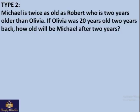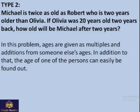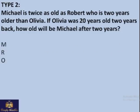Now we move on to the next type of age problem. Michael is twice as old as Robert, who is 2 years older than Olivia. If Olivia was 20 years old 2 years back, how old will Michael be after 2 years? Notice that Michael is twice as old — this involves multiplication. We must be careful because the 2 is multiplied here, while the other relationship is just addition. We use M for Michael, R for Robert, O for Olivia, and start with Olivia.